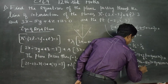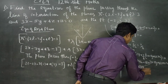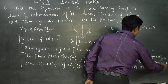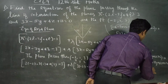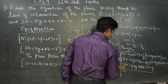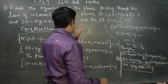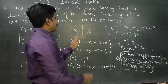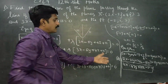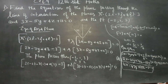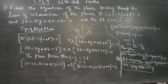15x minus 47y plus 28z minus 7 is equal to 0 — this is the equation of the plane passing through the line of intersection of the two planes and through the given point. Thank you.